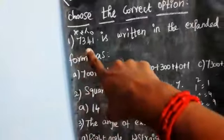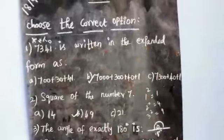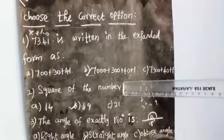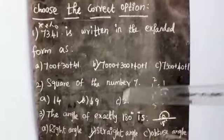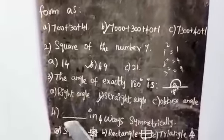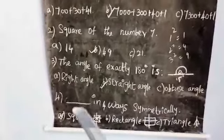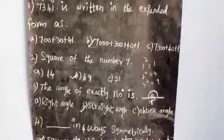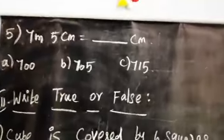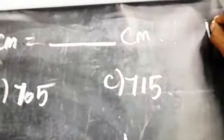To recap: 7341 is written in the expanded form as seven thousand plus three hundred plus forty plus one. Square of number seven equals forty-nine - seven sevens are forty-nine. The angle of exactly 180 degrees is called a straight angle. A square has four lines of symmetry. Now, one meter seven centimeters equals how many centimeters? We need to convert meters into centimeters.